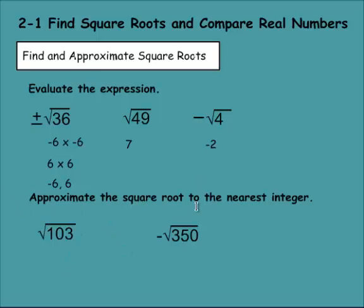Here we have to approximate the square root to the nearest integer. This one takes a little more work because 103 is not a perfect square root. You can't multiply two numbers to get 103. So what you need to do is decide what are the two perfect squares below it and above it.